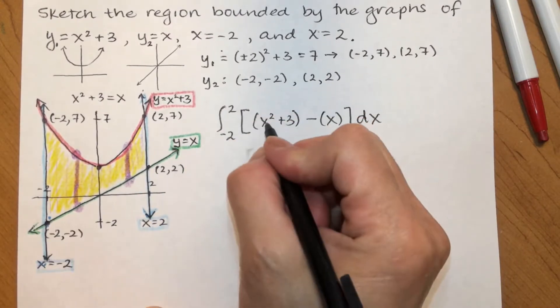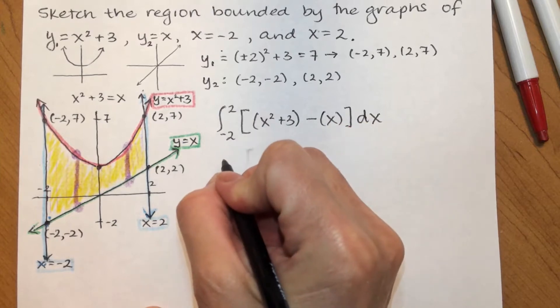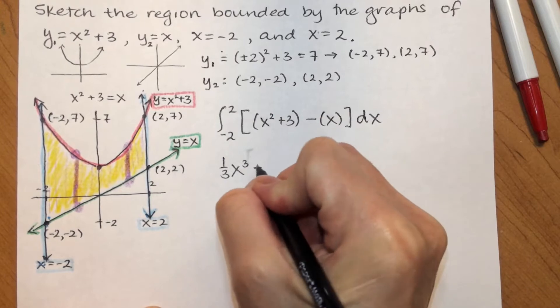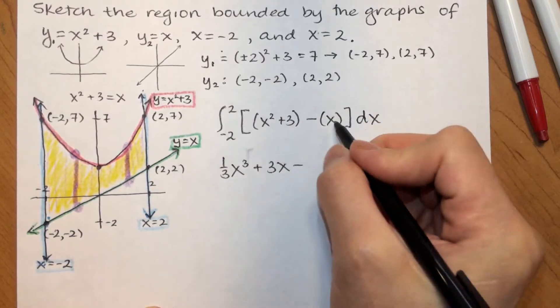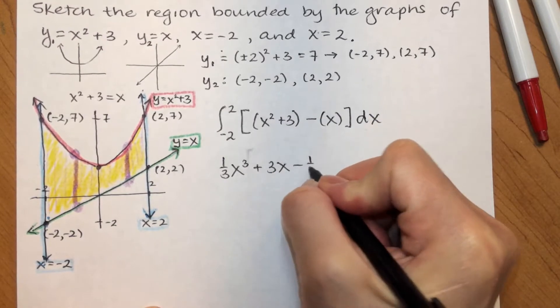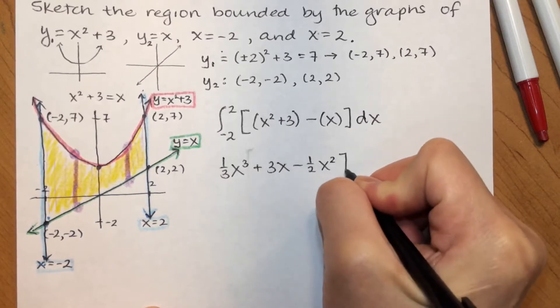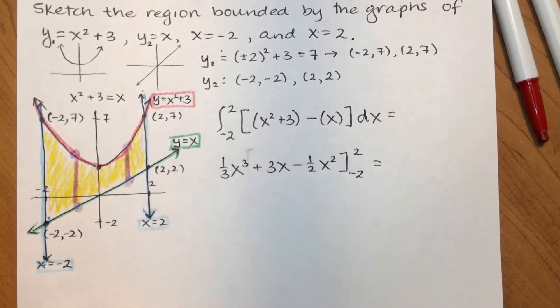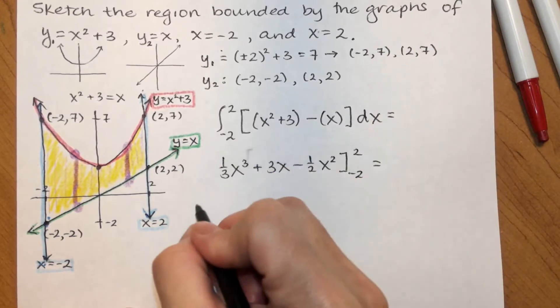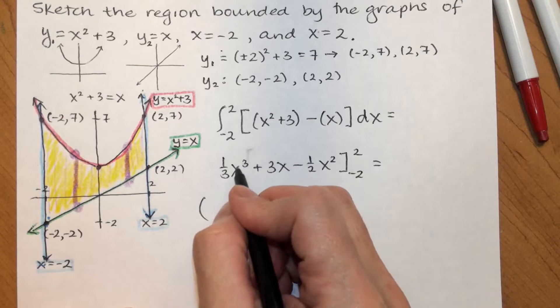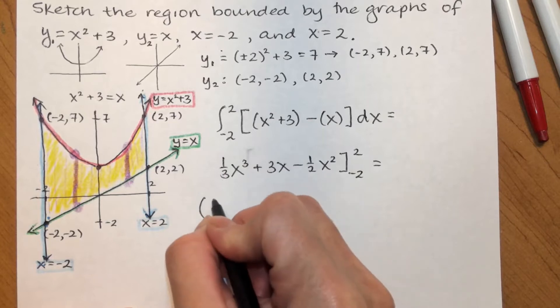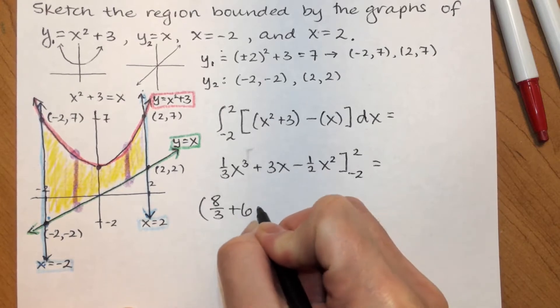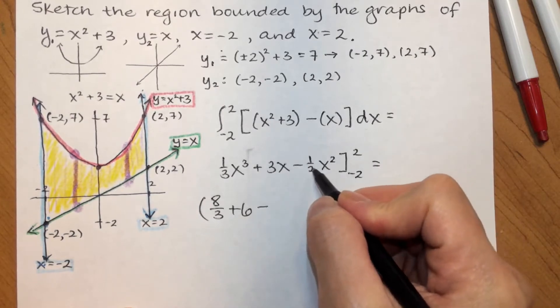x squared integrates to 1 third x cubed. 3 integrates to 3x. And, x integrates to 1 half x squared. I'm going to evaluate that from negative 2 to 2. When I plug a 2 in, I get 2 cubed over 3, 8 over 3, plus 6, minus 4 over 2.